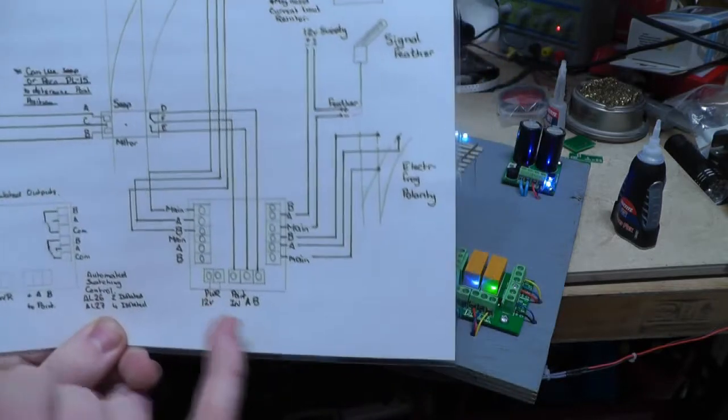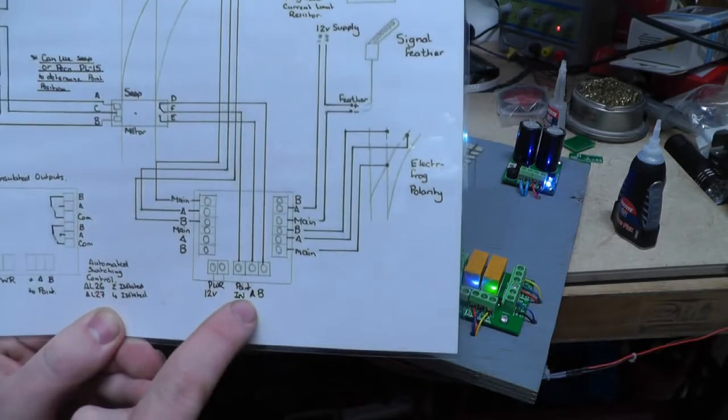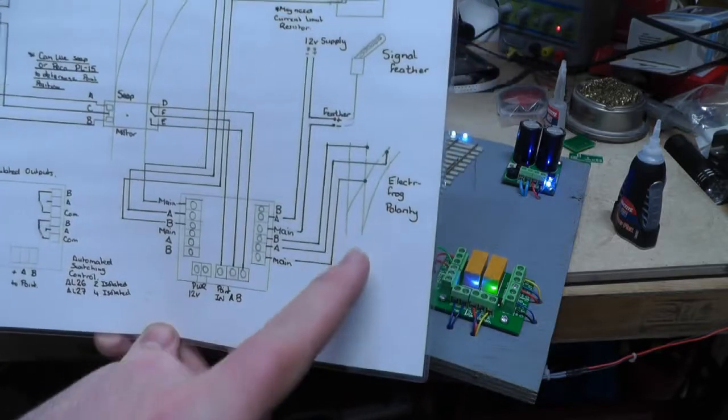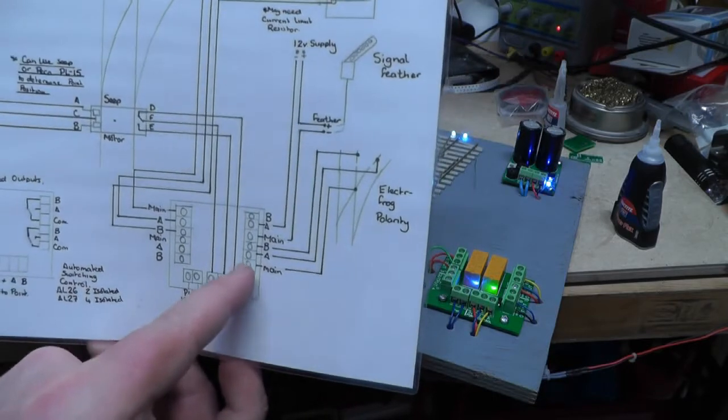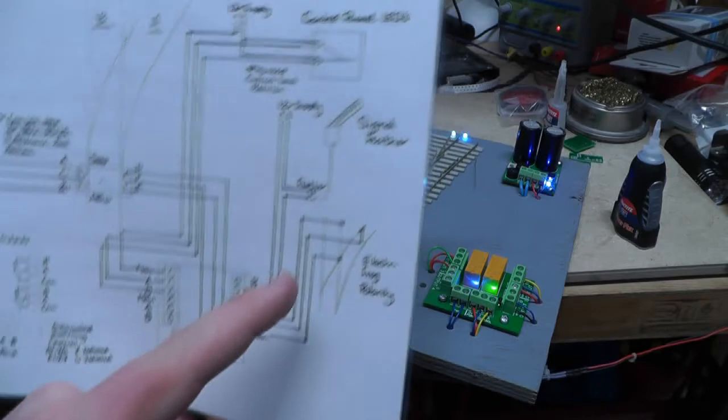So if that's a bit confusing, all it does is it just determines the direction of the point and gives it an A or a B output. So obviously when we come onto here, this is for the electrofrog point. Centre of the point comes in and goes to the main, and then you've got your two A and B outputs depending on which track you've got.